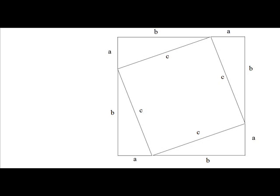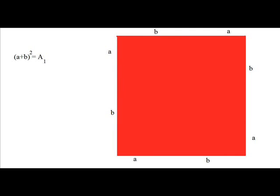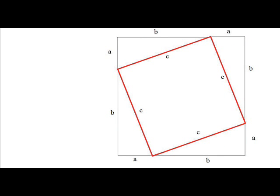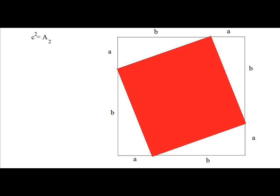If we look at the large exterior square, we know that its side has a length of A plus B. So you can find the area of the large square by multiplying two sides together, giving you the quantity A plus B squared. Let's call that A1. In the same way, the area of the interior square can be found by multiplying its sides C, so C squared equals the area of that square, which we will call A2.